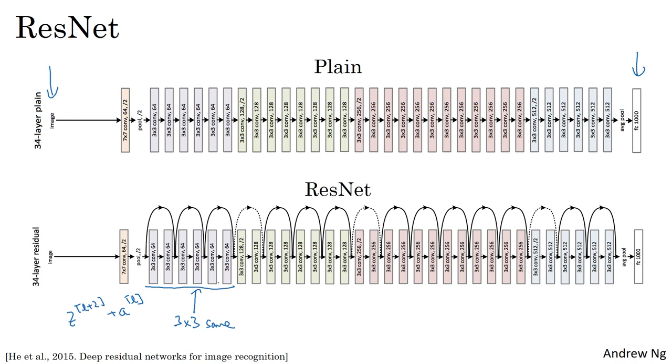And similar to what you've seen in a lot of networks before, you have a bunch of convolutional layers. And then there are occasionally pooling layers as well. And whenever one of those things happen, then you need to make an adjustment to the dimension, which we saw on the previous slide. You can do with the matrix Ws.